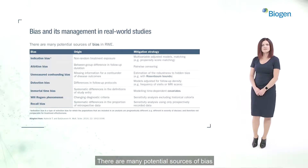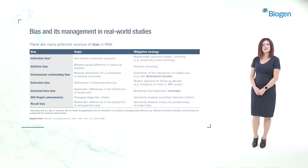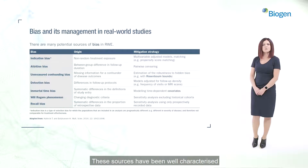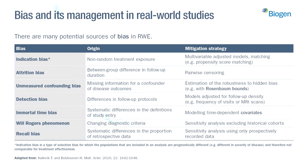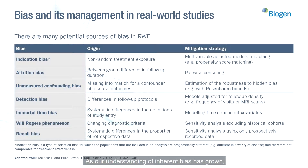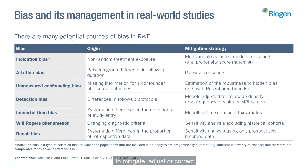There are many potential sources of bias in real-world evidence. These sources have been well characterised in clinical and other fields of research. It is important to acknowledge that these biases are an integral part of real-world evidence. As our understanding of inherent bias has grown, so too are the number of strategies available to mitigate, adjust, or correct for the influence of these different biases.